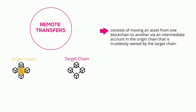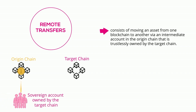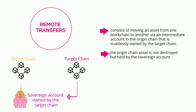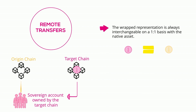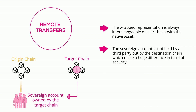Remote transfers consist of moving an asset from one blockchain to another via an intermediate account on the origin chain that is trustlessly owned by the target chain — known as the sovereign account. In such cases, the origin chain asset is not destroyed but held by the sovereign account. The XCM execution on the target chain mints a wrapped, also referred to as virtual or cross-chain asset, representation to a target address. The wrapped representation is always interchangeable on a one-to-one basis with the native asset.